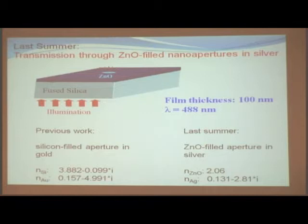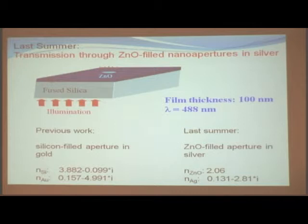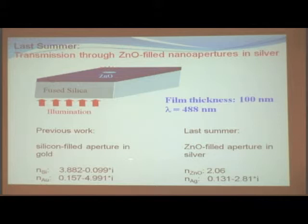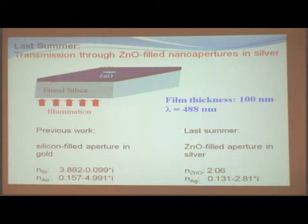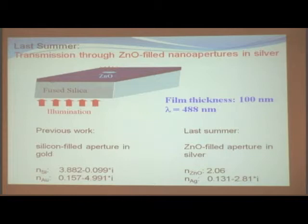Before the research we did last summer, other researchers had worked on this with my mentor. They used different materials to fill the hole and to make the layers. Here are some differences between the materials — specifically the index of refraction. When we use different materials, the index of refraction of these materials will be different, and we want to see what differences we can get by using different materials.